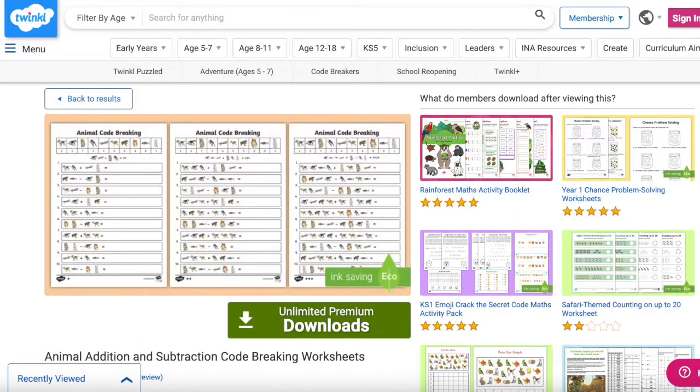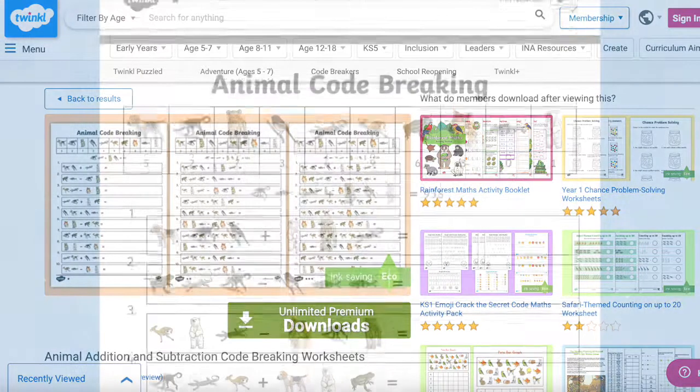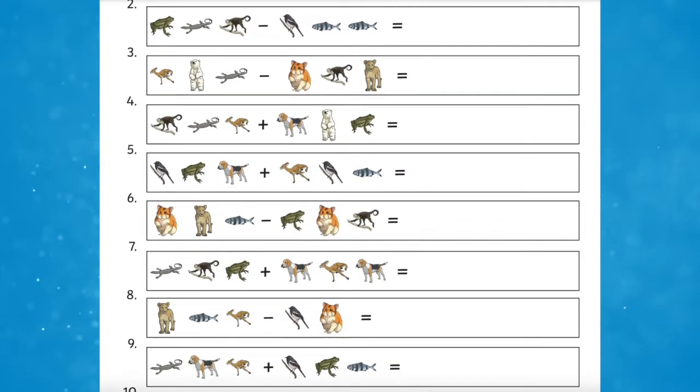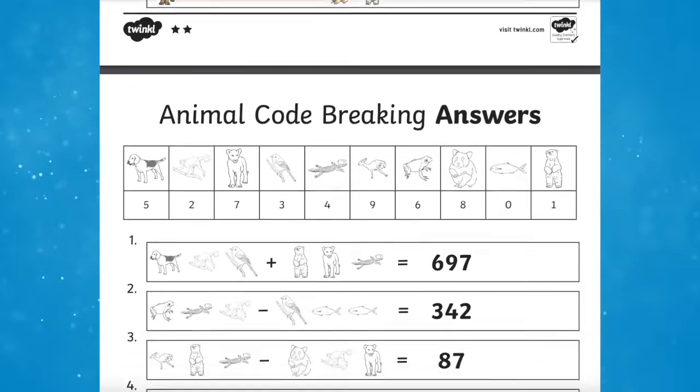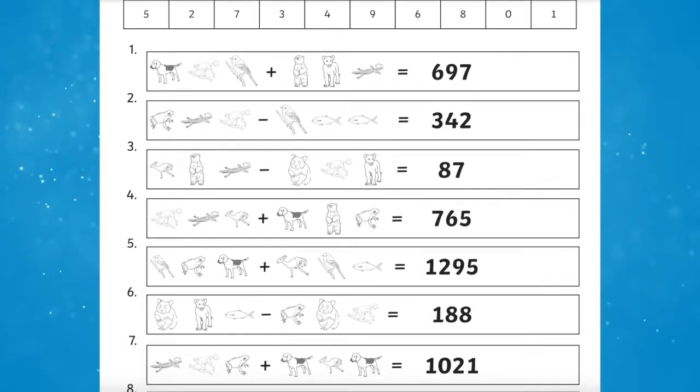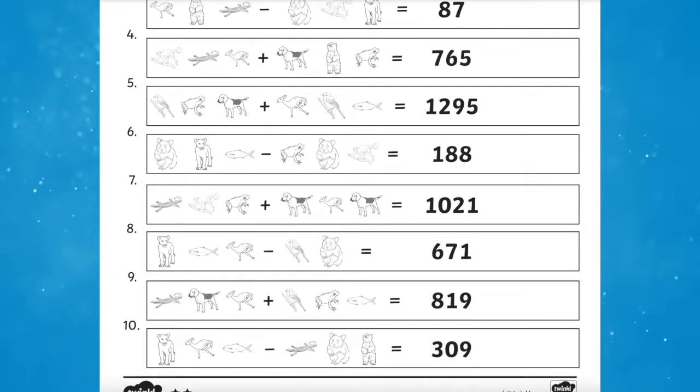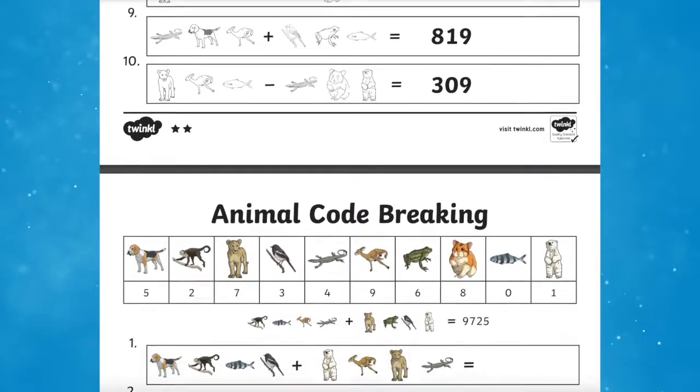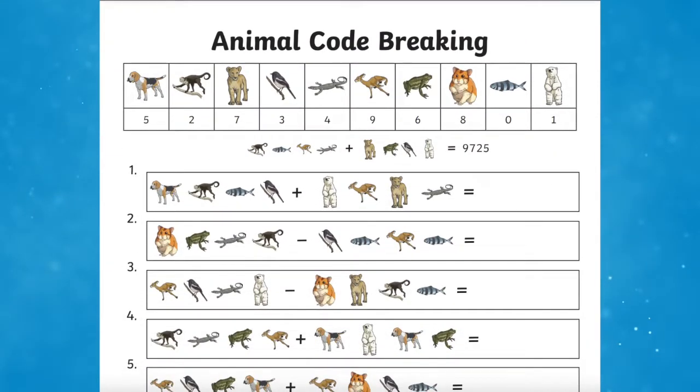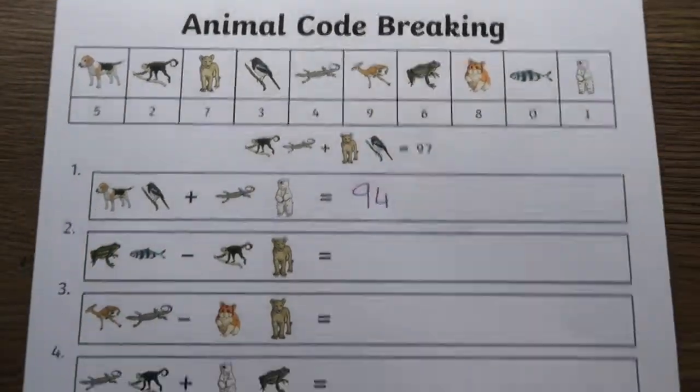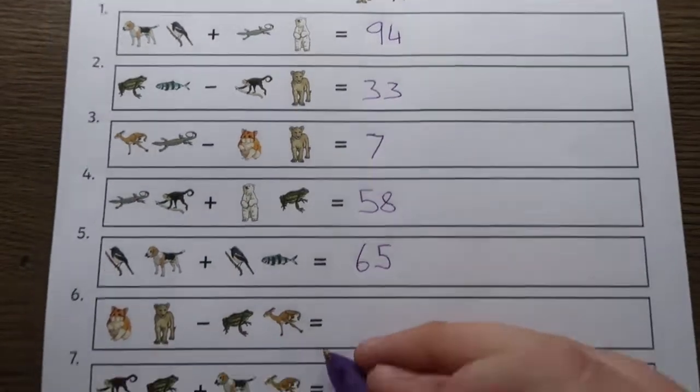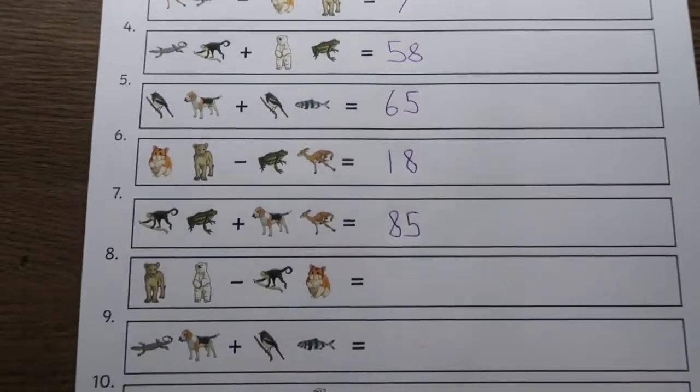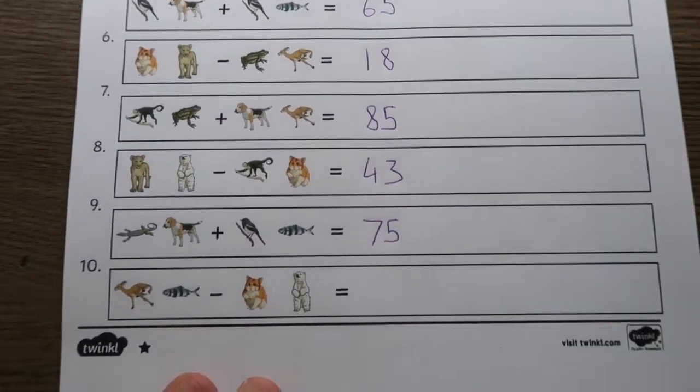And if you're looking for something a little bit different, the animal addition and subtraction code breaking worksheets are just what you're looking for. This set of differentiated animal themed addition and subtraction worksheets are a brilliantly fun and engaging way for your Key Stage 2 class to practice solving calculations using number bonds and related facts. Children must use the animal key at the top to decode the number problems and solve them. These would be great for a maths lesson or even a home learning task.